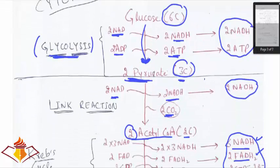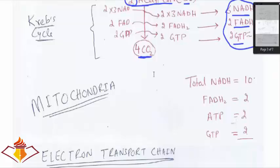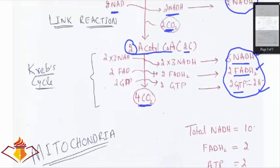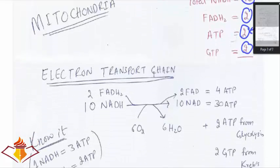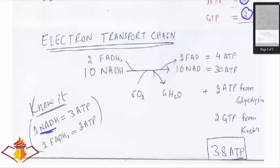So the summary is: glucose is oxidized to pyruvate, pyruvate to acetyl-CoA, and acetyl-CoA enters the Krebs cycle to produce CO₂. The total products are 10 NADH, 2 FADH₂, 2 ATP from glycolysis, and 2 GTP from the Krebs cycle. Since 1 NADH produces approximately 3 ATP and 1 FADH₂ produces 2 ATP in the electron transport chain: 10 NADH → 30 ATP, 2 FADH₂ → 4 ATP, plus 2 ATP and 2 GTP — giving a grand total of 38 ATP.